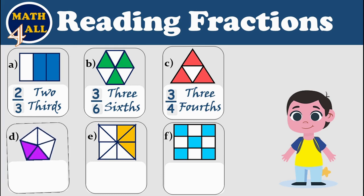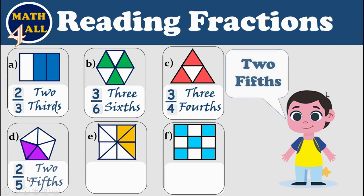Here we have just two colored or shaded parts, so we will write two up in the numerator. And the one whole is divided into five parts — all the parts is five — so we will write five down in the denominator. Now we can read it as two over five, or two fifths.